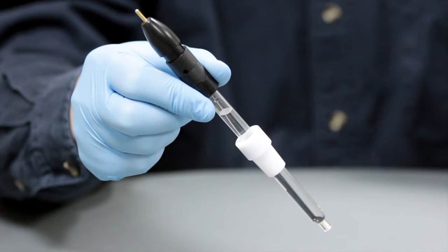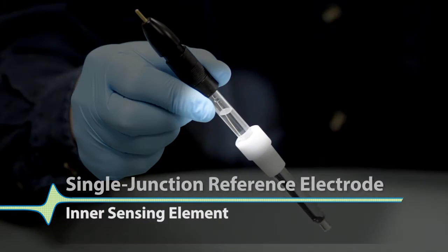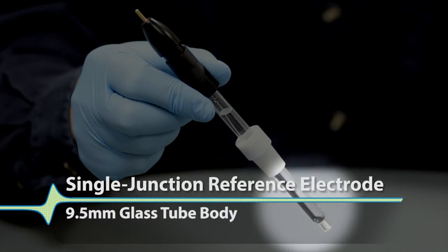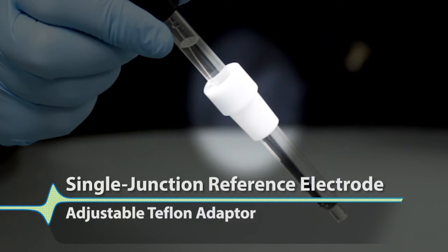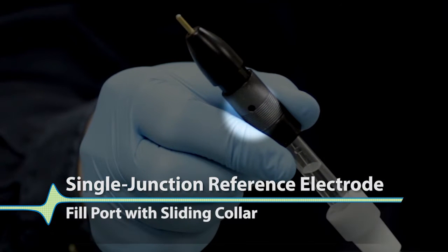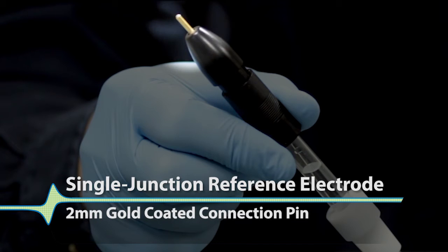The structure of the reference electrode is broken up into six parts: the inner sensing element, a 9.5 millimeter glass tube body, a tip with a porous frit, an adjustable Teflon adapter, a fill port with a sliding collar, and finally a 2 millimeter diameter gold-coated connection pin.